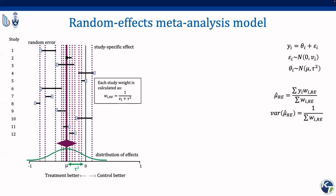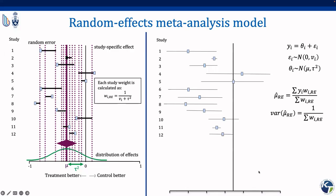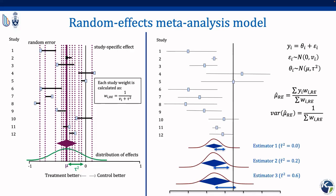The summary or average effect is of primary interest. Now, the choice of method to estimate between-study variance may give different results, and this may impact the estimation of the summary effect size and its uncertainty through the study-specific weights calculated under the random effects model. Similarly, the method used to estimate uncertainty around the summary effect size may impact its interpretation.